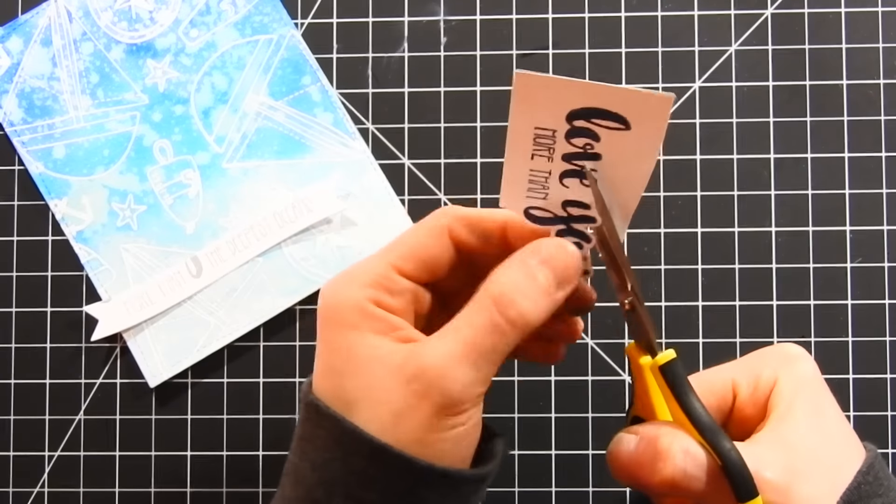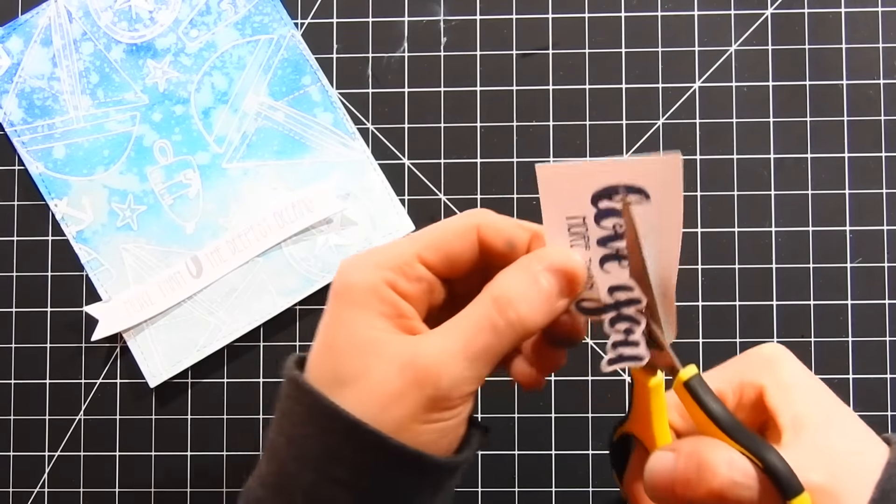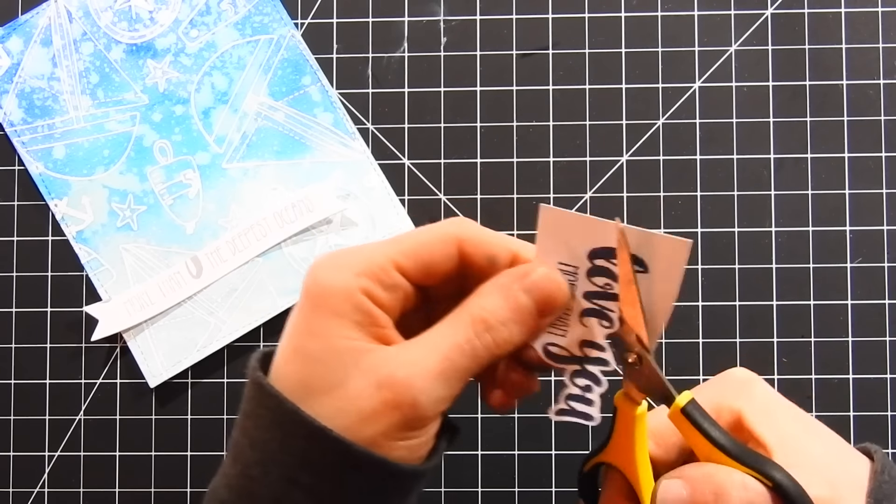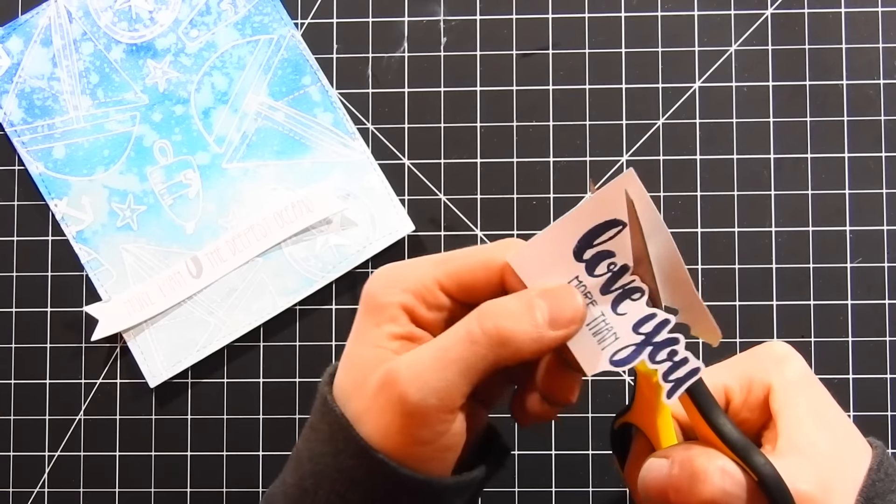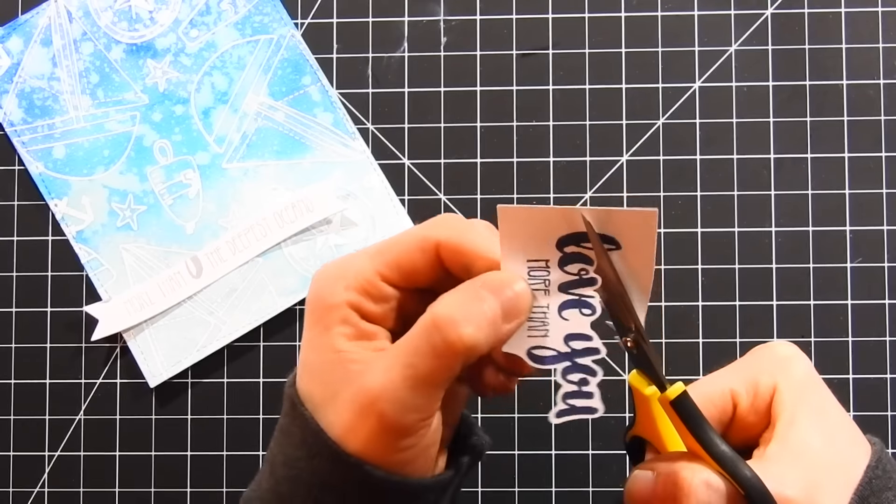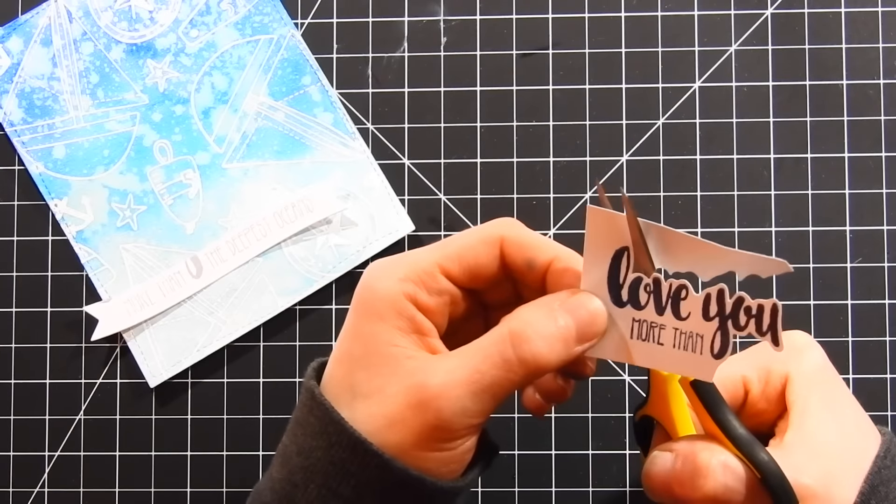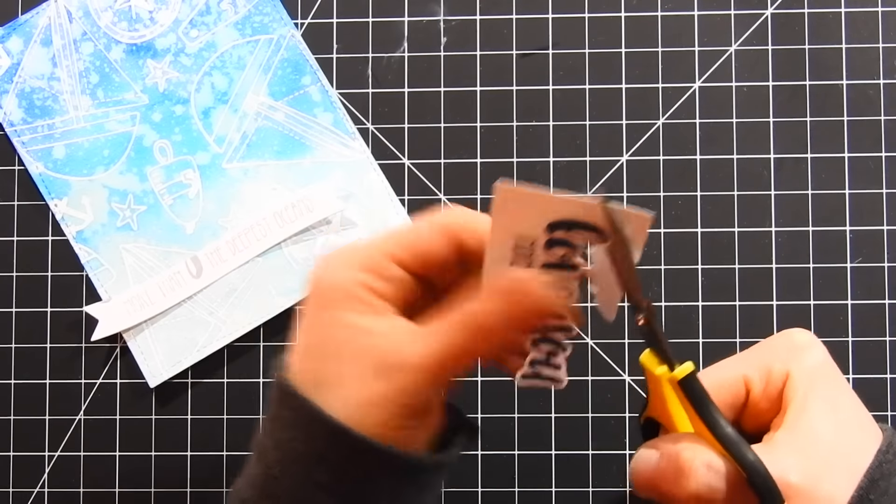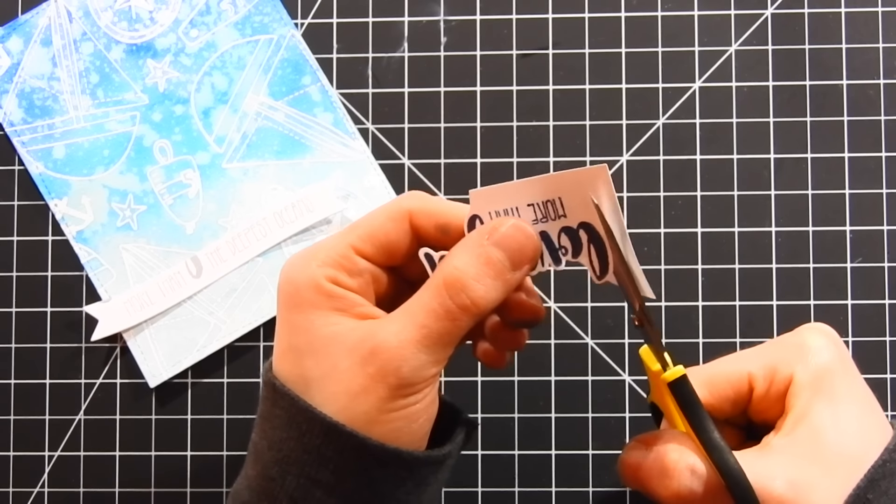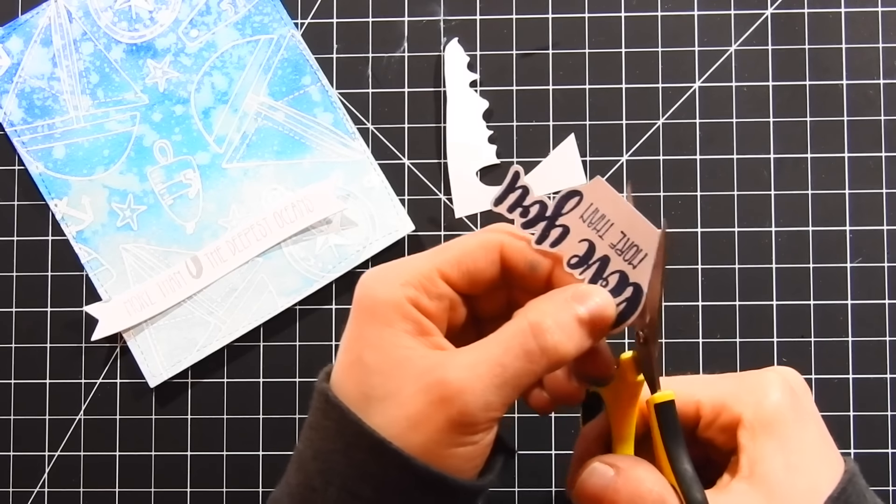Just make sure that you turn the paper and not your scissors, because that will help you get a much cleaner cut. It takes a little bit of practice to do some fussy cutting, but as you do it more and more, you'll definitely notice an improvement in your cutting. I think it's something really fun to be able to do once in a while to your cards to have this popped up sentiment off of your card panel.